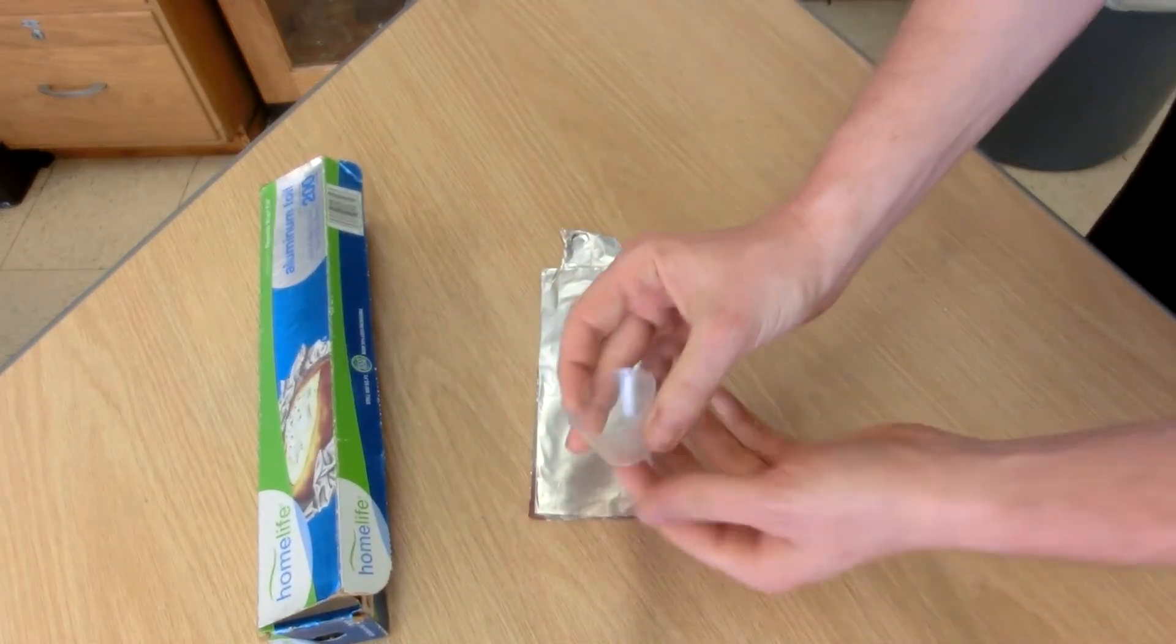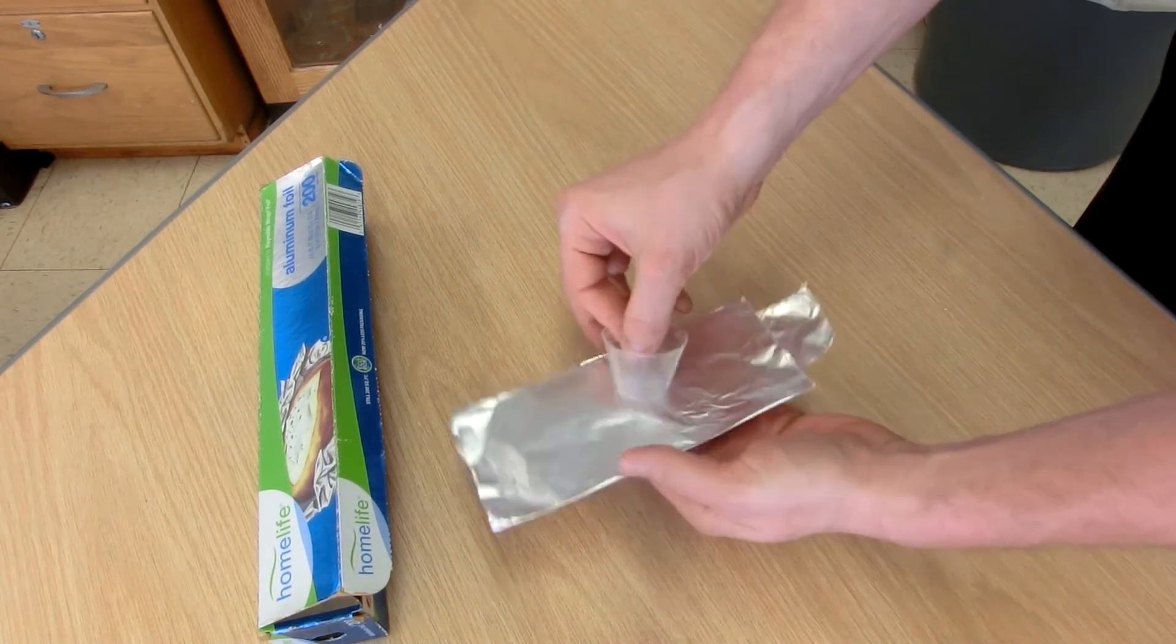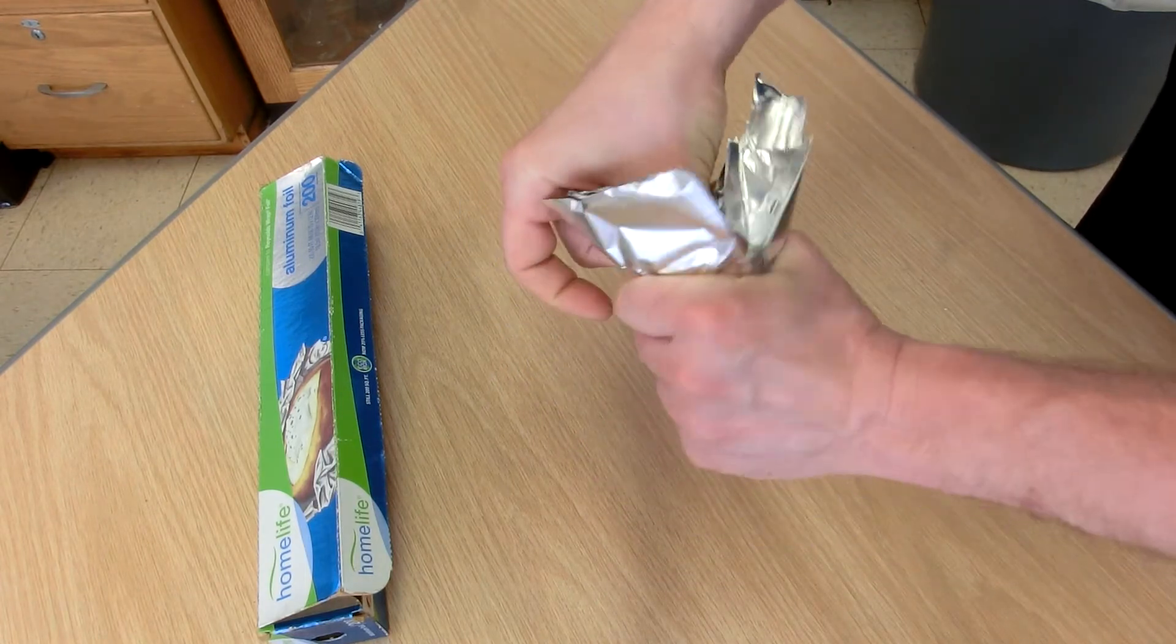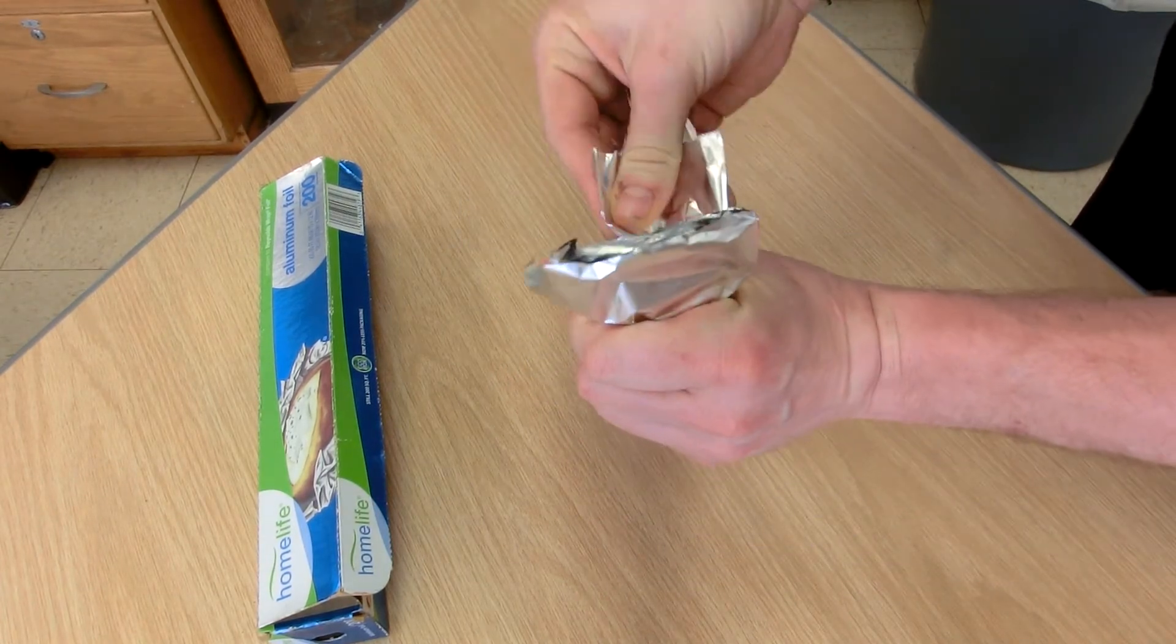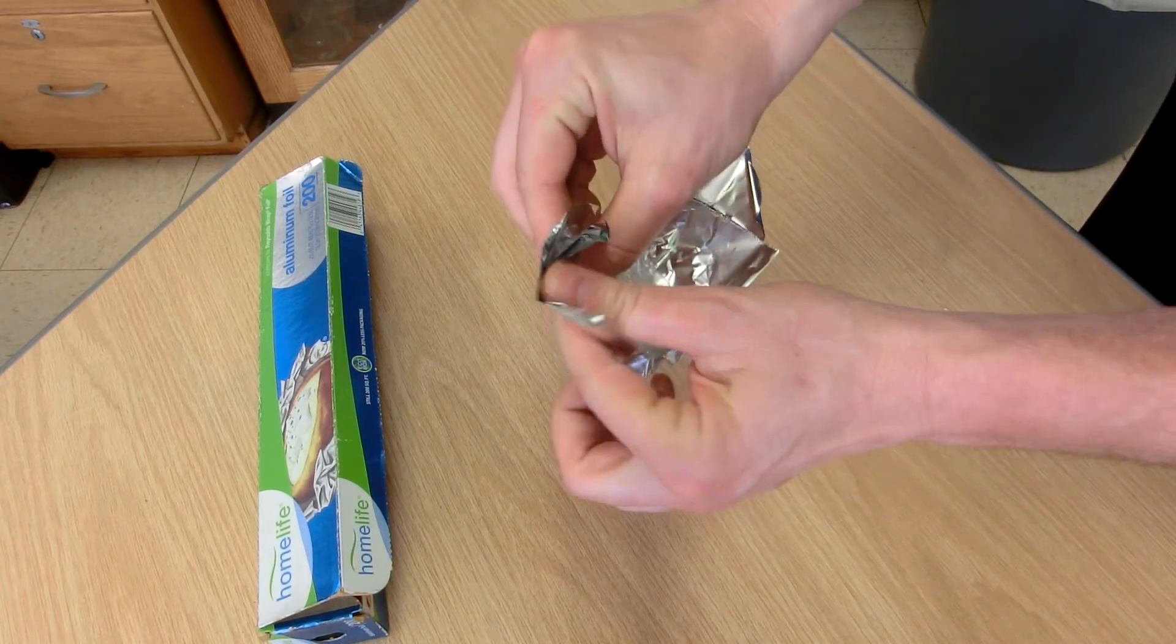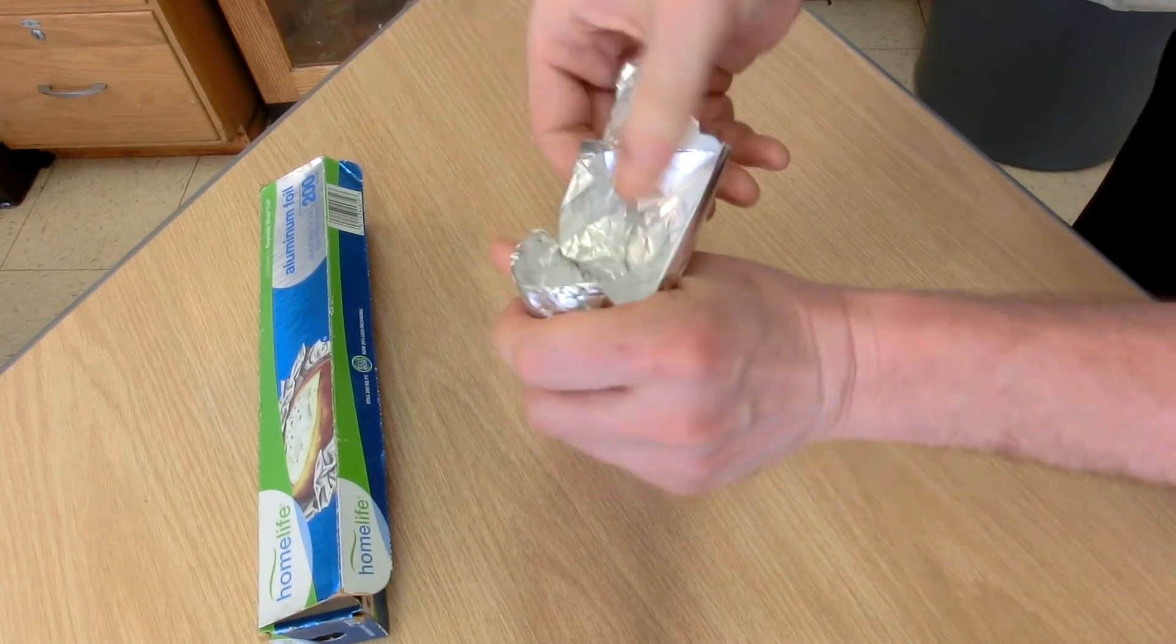Then I took these medicine cups that I had around my classroom and wrapped the foil around the outside. You can either trim the edges with scissors or just fold them down across the top and around.